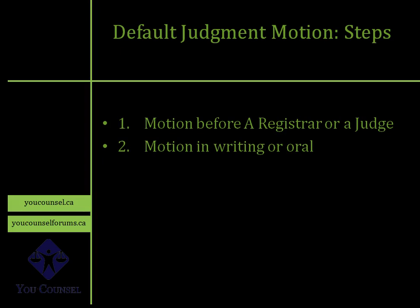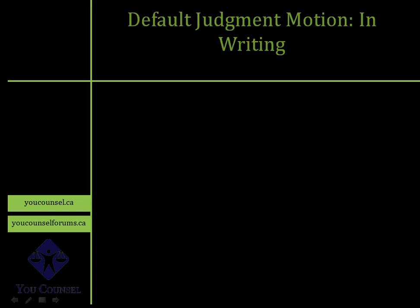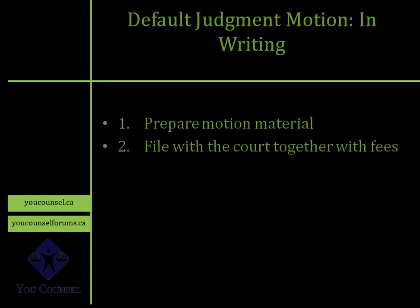The next consideration is whether to bring the motion in writing or orally. With a registrar, you always bring your motion in writing — you prepare your motion material and file it. With a judge, you can still bring the motion in writing, or you can prepare your motion materials, file them, and then attend the motion before the judge and provide your submissions in person. A default judgment motion in writing is rather straightforward: you prepare all the motion material, file it with court fees, and wait for the court's response.